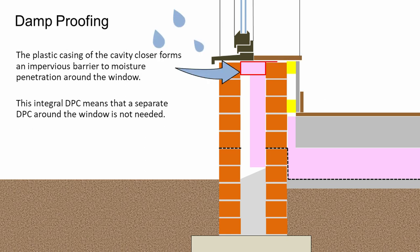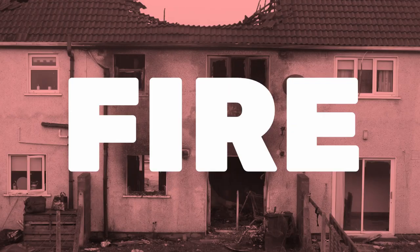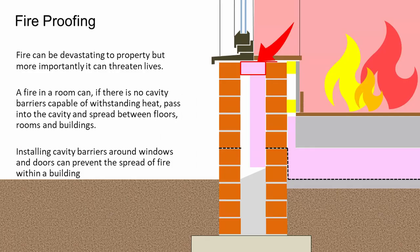The cavity closer also serves to protect the wall from the passage of moisture. Because it's wrapped in plastic, it acts as a DPC, helping to stop moisture reaching the inside of the building. One of the main things we're concerned about when talking about cavity barriers is fire. Fire is devastating to buildings and property, but more importantly it can threaten lives. Within buildings, we put products in that act to restrict the passage of fire so that we have the maximum amount of time for somebody to escape.